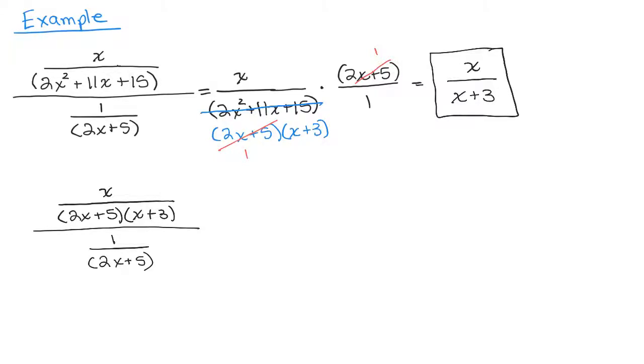So I would multiply the numerator by 2X plus 5 times X plus 3. And I would multiply the denominator by 2X plus 5 times X plus 3. Now, if you want, you could write each of those over 1.